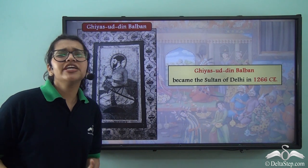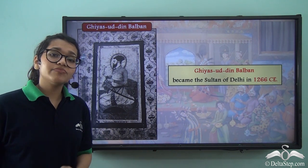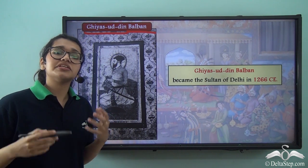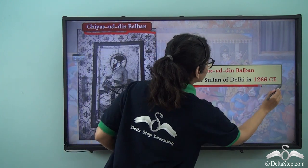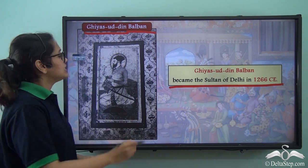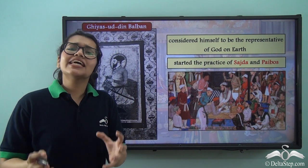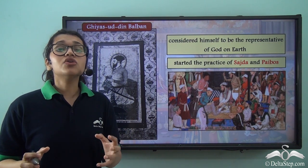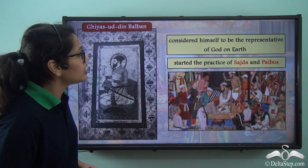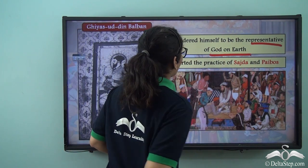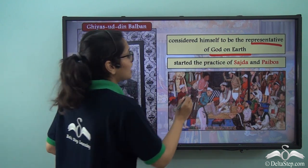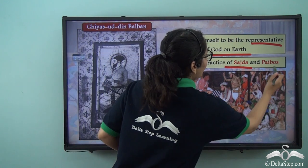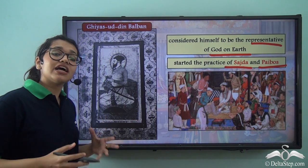After Razia Sultan, many weak rulers came into power. Eventually, Balban came to power and gave himself the title Giyasuddin, becoming the Sultan of Delhi in 1266 CE. According to Giyasuddin Balban, kings were representatives of God and had to be authoritative, not to be questioned. Because of this belief, he started the practices of Sajda — lying prostrate before the Sultan — and Paibos, which meant kissing the Sultan's feet as a mark of respect.